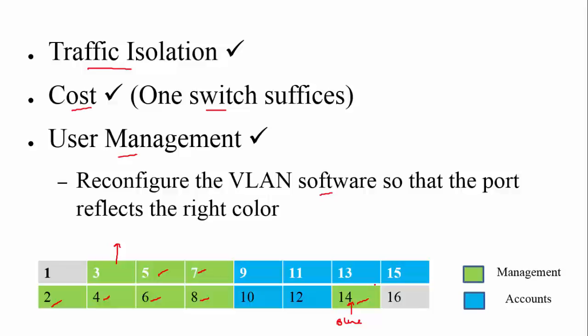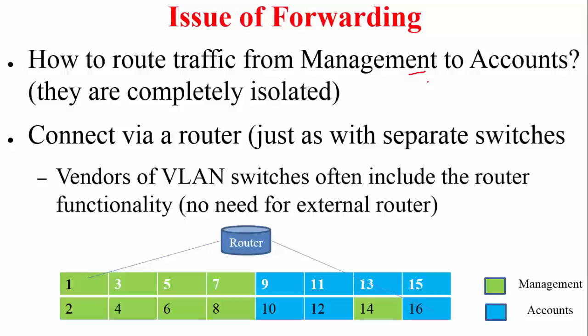Suppose user U3 connected on port 3 wants to send a unicast packet to user 13, who belongs to the other group. How does this routing happen? We are looking at the problem of routing traffic from the management group to the accounts group, since they are completely isolated as far as the switch is concerned.